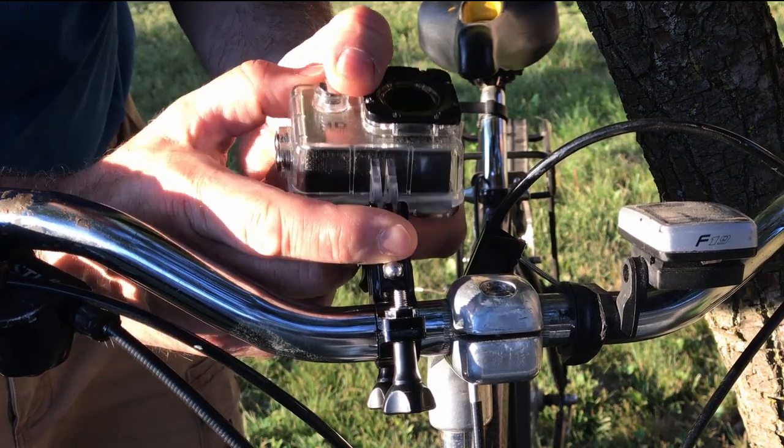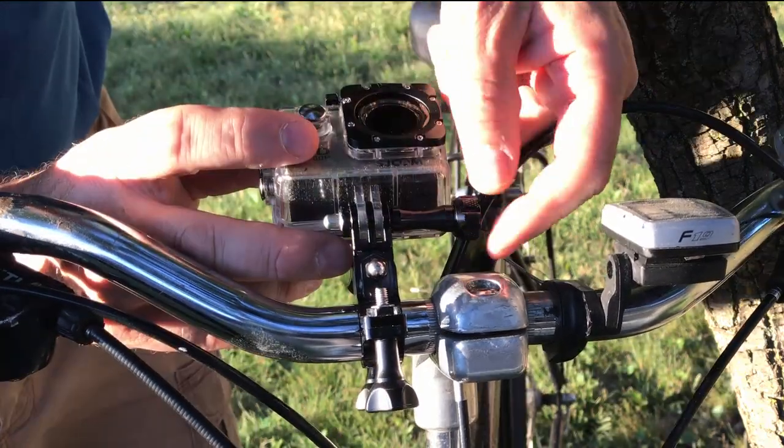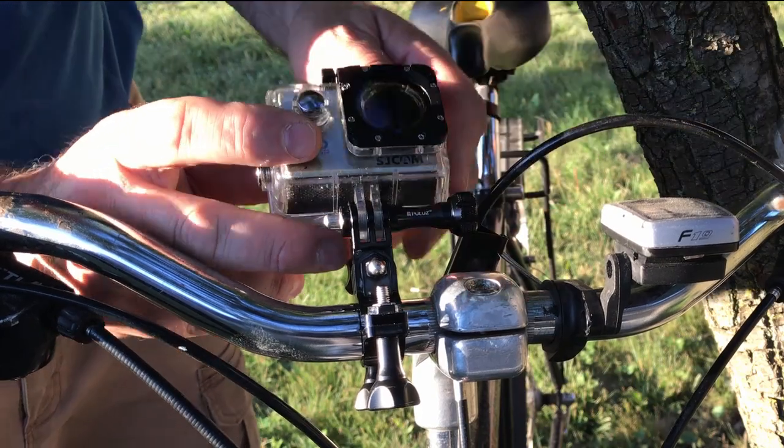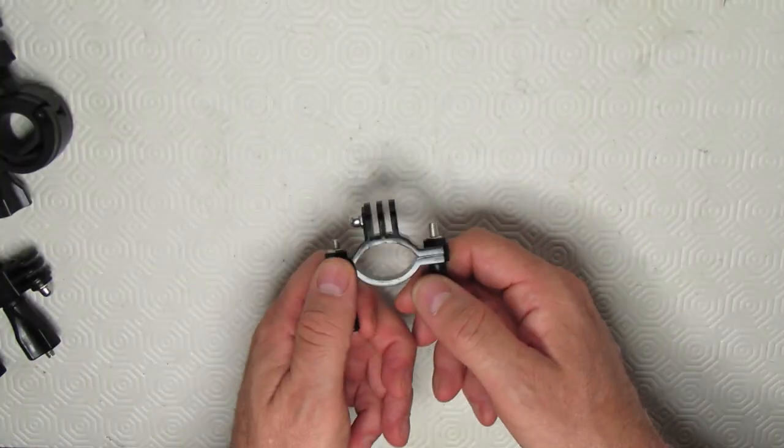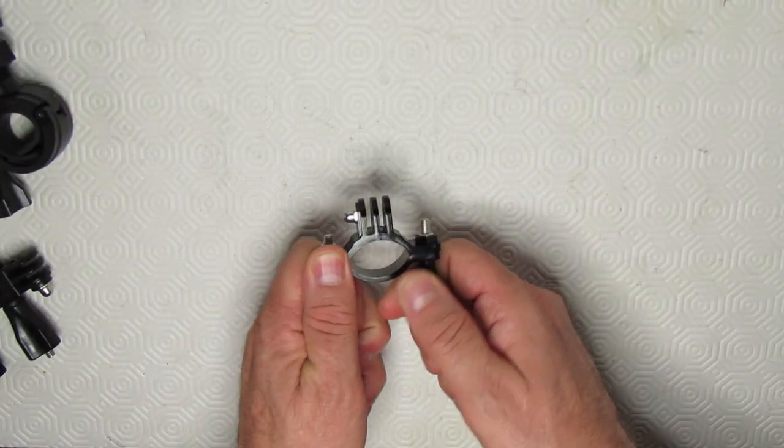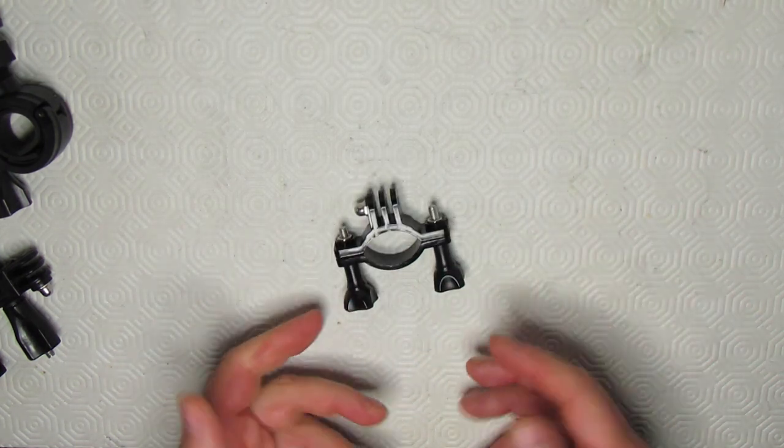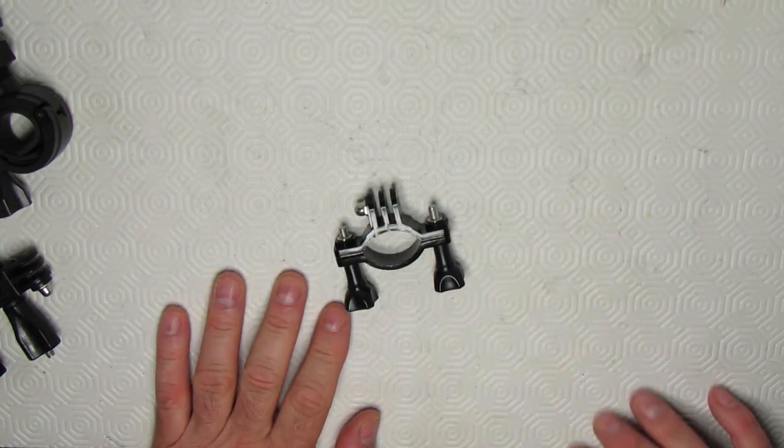And the one thing about pivot arms and mounts - every time you add a pivot arm, you increase the chance of vibration. So make sure you tighten up as best you can. If you look here, it does flex a little bit. So at higher speeds and bumpier roads, this thing is not going to fare too well.